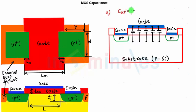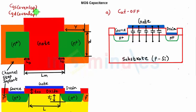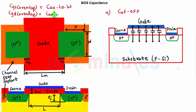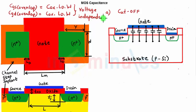Before we go into region A (the cutoff region), we know that even without any external voltage there is some overlap of the gate with the source and some overlap of the gate with the drain. The CGS overlap capacitance and CGD overlap capacitance are both independent of any external voltage. CGS overlap = COX × LD × W, and similarly CGD overlap = COX × LD × W, where COX is the permittivity of the oxide divided by the oxide thickness. Remember, both are voltage-independent capacitances.